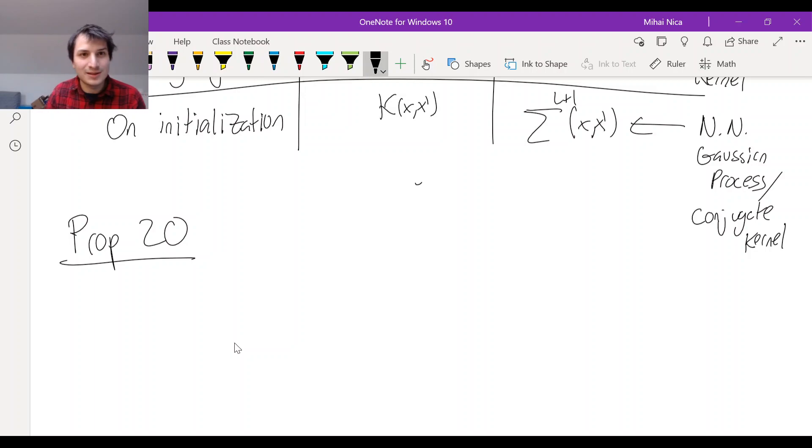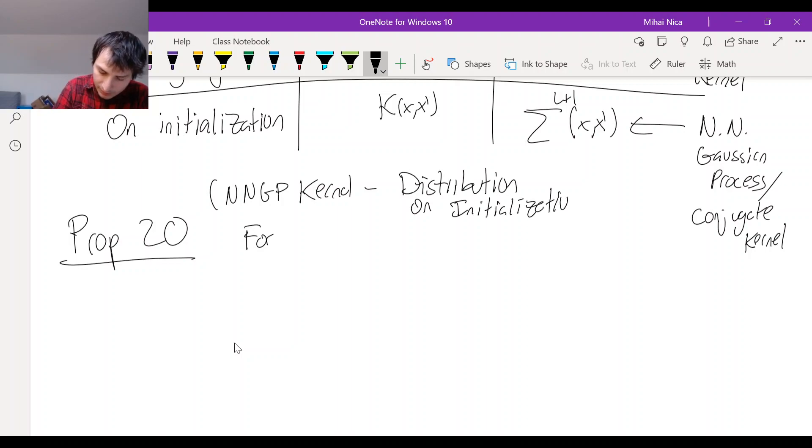So what's true? So when I write F, I really mean the limit of F as these widths go to infinity. So what's true is for any point X. So this is the NNGP kernel. And the formula is for the distribution on initialization. Okay. So for any point X, the following is true.